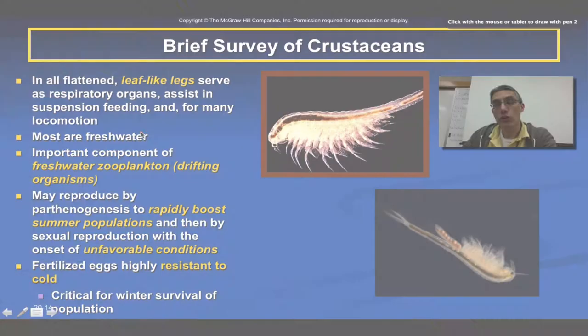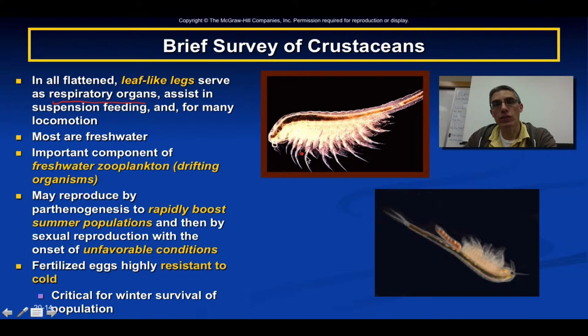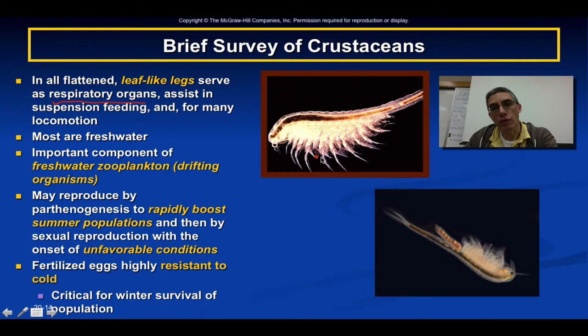When looking at branchiopods, you'll notice their bodies tend to be flattened, and they have what we consider leaf-like legs. These legs serve various functions — one is acting as a respiratory organ. As these animals move their legs back and forth through the water, it brings them into close contact with oxygen. This forces O2 into the respiratory organs attached to those legs. The legs also assist in suspension feeding and provide locomotion. Most branchiopods are freshwater, but there are a few marine varieties as well.